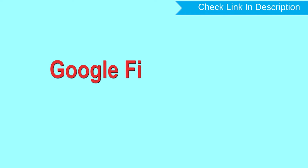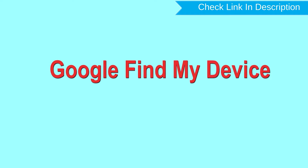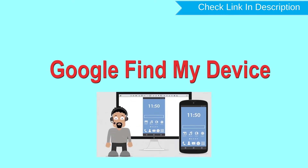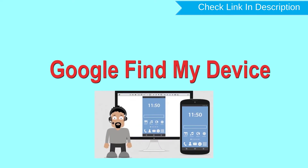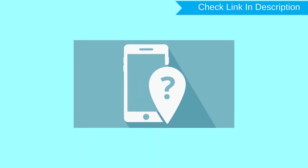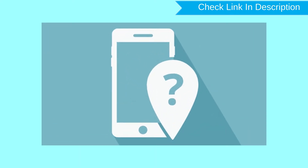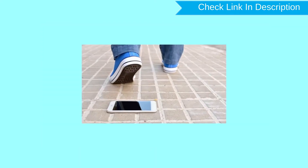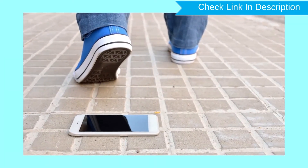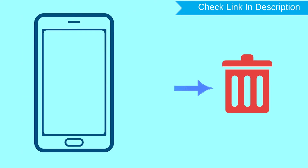Hard reset with Google Find My Device. This is the best method to reset your Android phone remotely. This method is useful when you lose your phone or are not able to access your mobile. This method also deletes all your Android phone data.